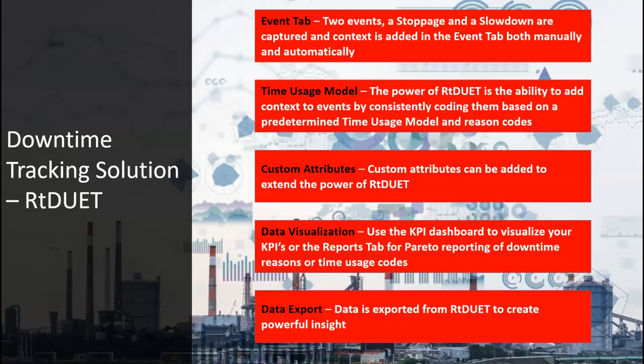Now we'll take you through some of the main features of RTDuet. The main operator interface for acknowledging and coding events is the event page, which allows the operator to easily identify new events and apply context using a standardized tree of reason codes. The associated time usage model allows you to classify each reason code into a delay type, facilitating generation of standard KPIs such as availability, utilization, and operating efficiency. The report page allows you to see your top offending downtimes by reason code or time usage code, and the KPI page lets you deep dive into plant performance with a dashboard and trend visualization. Data export also allows you to interface with other reporting platforms to generate advanced analytics and business intelligence.